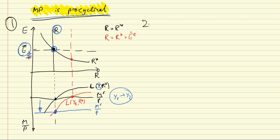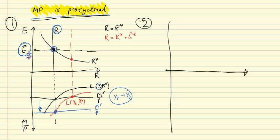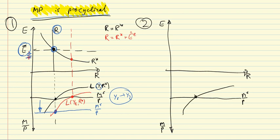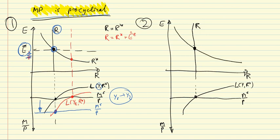Let's do a second example with the same diagram — E, R, M over P. Again we have our initial money supply, the money demand function L(Y, R), and that equilibrium implies a domestic interest rate which, at the intersection with the foreign interest rate, gives us that initial fixed exchange rate E-bar, the targeted exchange rate the monetary authorities want to maintain.